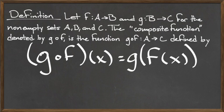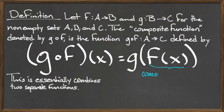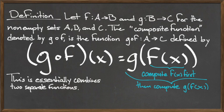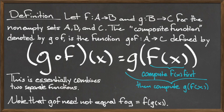There are several important notes to make regarding this definition. The first note is that although this composition is read from left to right as g compose f of x, when actually evaluating the composition we work from right to left — we first plug x into the function f, and plug the result of that function f into g of x. The second note is a direct consequence of the first: in order for the composition g compose f to be valid, the codomain of f must be a subset of the domain of g. For example, if the output f of x was equal to 0 but 0 was not in the domain of g, then we could not perform the composition g compose f. The output of the function f must be an acceptable input into g, otherwise the composition is invalid.